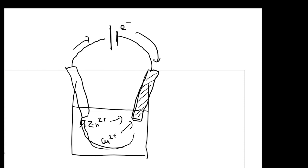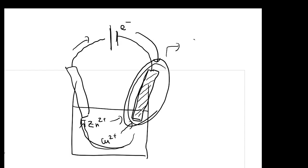Once the electrons move here, on this specific electrode, it's going to undergo a reduction reaction because the cation is going to receive the electrons and get reduced. If something gains electrons, it undergoes reduction. These electrodes are called the cathode.